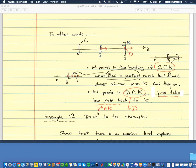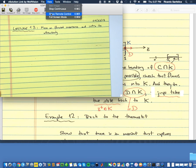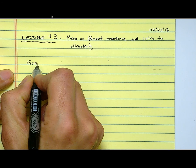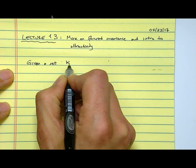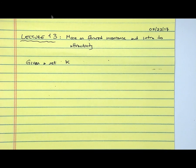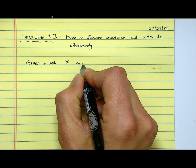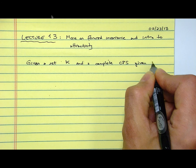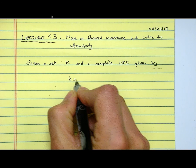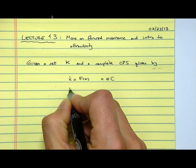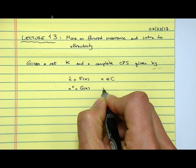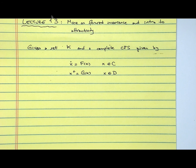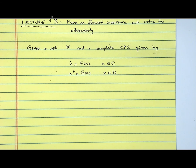This is what we would like to generalize now. The idea is that, in general, given a set, let's call it K - and in that example, the set K was the interval between a half and one - and a complete CPS given by x dot equal f of x, x in C, x plus equal g of x, x in D. And again, remember, this could be inclusions.